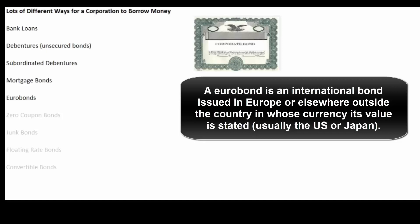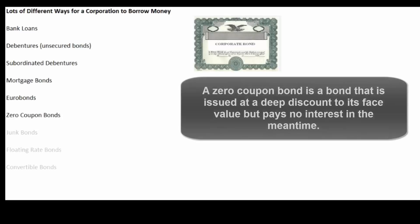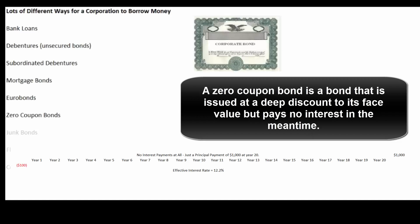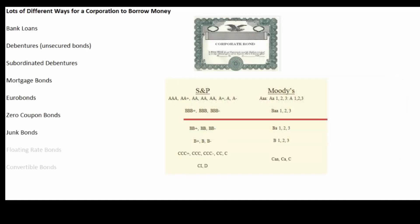For example, if a US corporation issues bonds in Japan and pays in US dollars, those would be eurobonds. Or they could be zero coupon bonds — the company says it will pay a thousand dollars twenty years from now but only collects, say, a hundred dollars today. At the end of twenty years they pay back the thousand. There's no coupon; the interest is imputed from the growth from a hundred dollars to a thousand dollars.